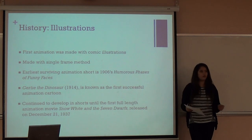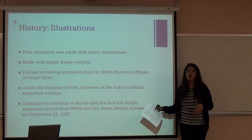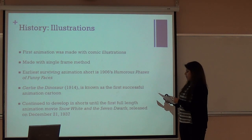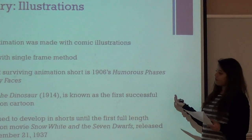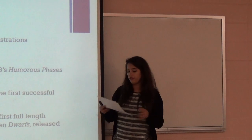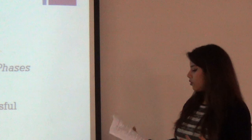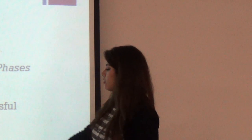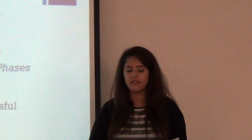For this animation short, all they had was a chalkboard and an animator would draw each character and go through the whole storyline. At the beginning you could see what the animator looks like and how he's drawing, but later that was taken out with stop motion. Another surviving animation short is called Gertie the Dinosaur, which is from 1914, known as the first surviving animation cartoon. Animation shorts were developed until the first feature-length movie, Snow White and the Seven Dwarfs, released on December 21, 1937.